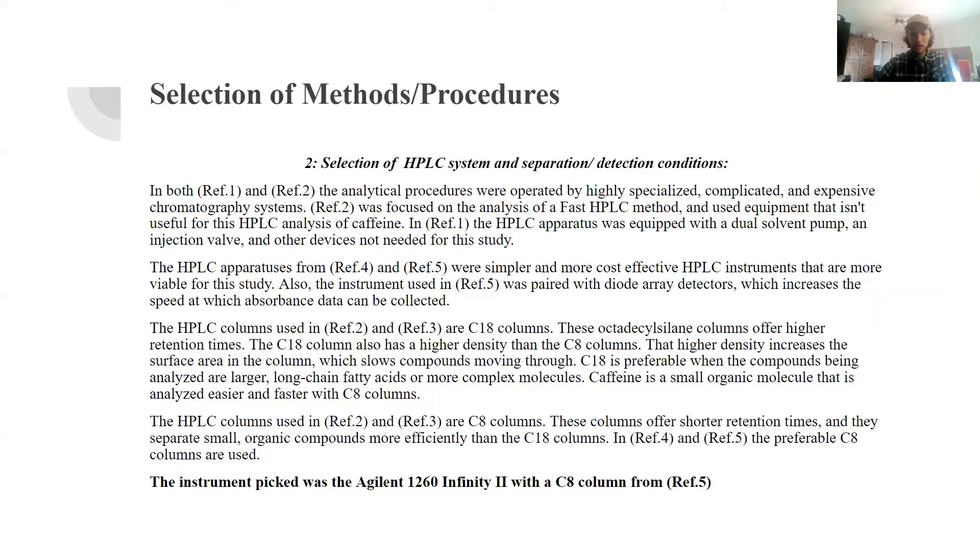The HPLC columns used in reference 2 and in reference 3 are C18 columns. These octadecylsilane columns offer higher retention times. The C18 column also has a higher density than that of the C8 column. That higher density increases the surface area in the column, which will slow down compounds moving through it. C18 is preferable when the compounds being analyzed are larger, long-chain fatty acids or more complex molecules.